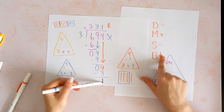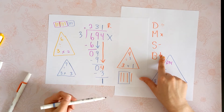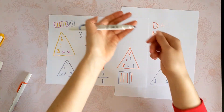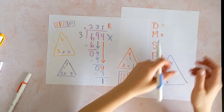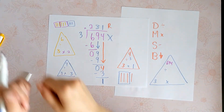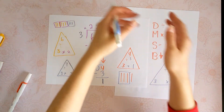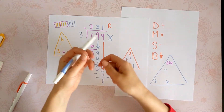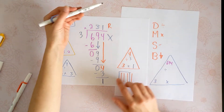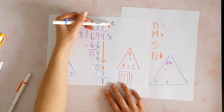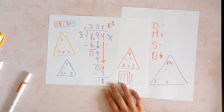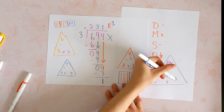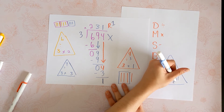Can you do anything with this 1? No, you can't. So here's what happened: I had 694 balloons, I gave them to my three friends, and I ended up with one left over that I can't split up — so that's the remainder. We are saying 694 divided by 3 is 231 remainder 1.